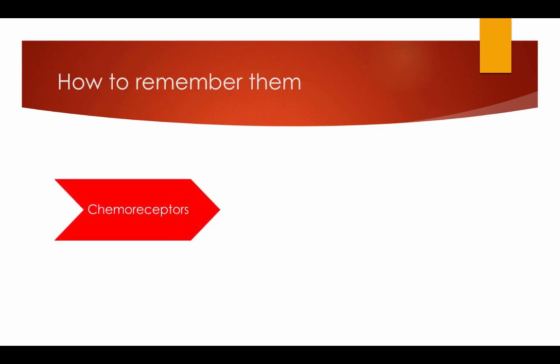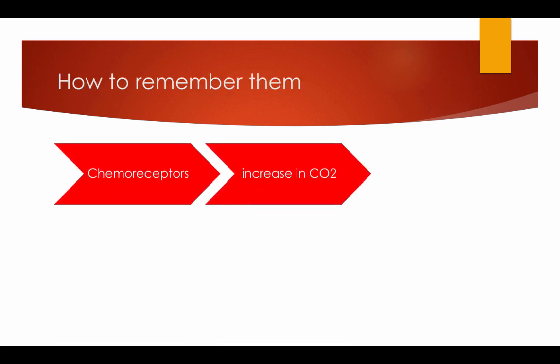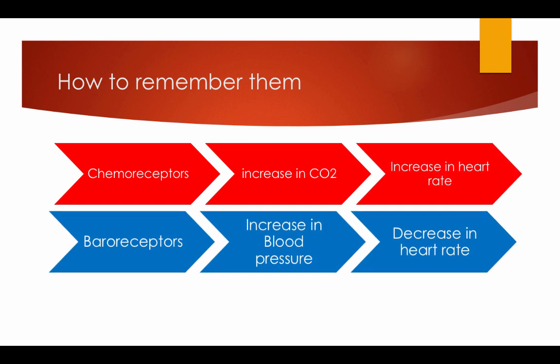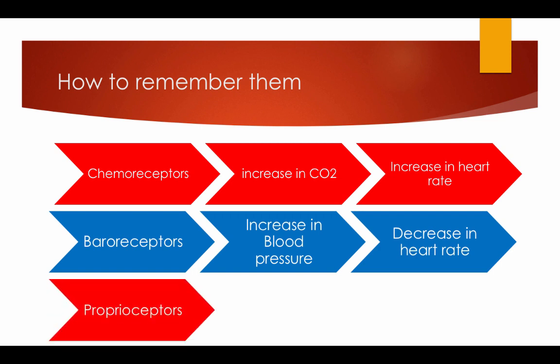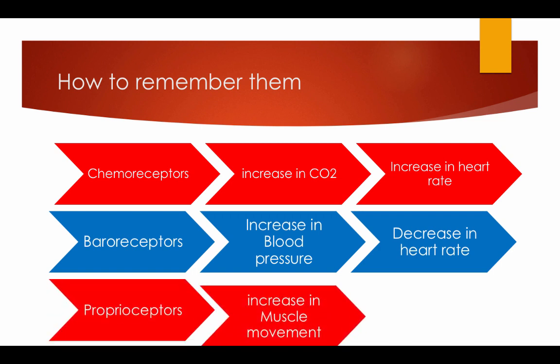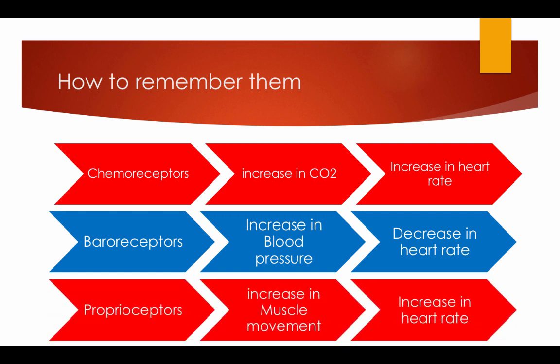How to remember them: Chemoreceptors — increase in CO2, increase the heart rate. Baroreceptors — increase in blood pressure, decrease the heart rate. Proprioceptors — increase in muscle movement, increase the heart rate. Thank you very much for today.